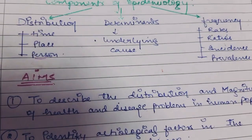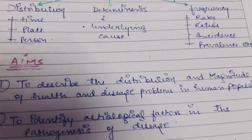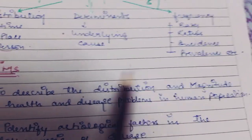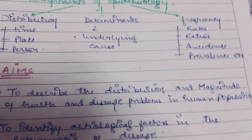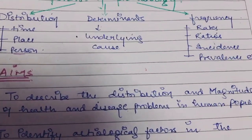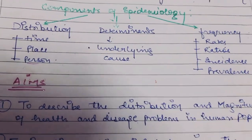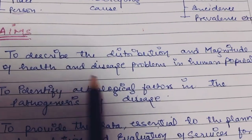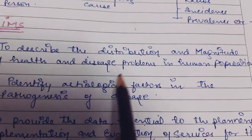Now what are the aims of epidemiology — what we want to achieve from our study. First is to describe the distribution and magnitude of health and disease problems in a human population, which means we want to know the distribution of the disease on the basis of time, place, and person. The second aim is to identify etiological factors in the pathogenesis of disease, which means we want to know the causative agent — that is, the determinants of the disease.